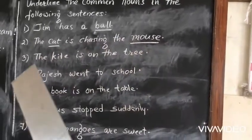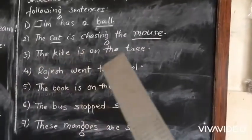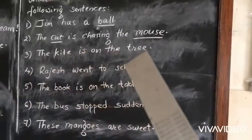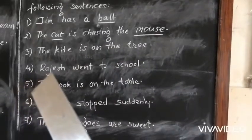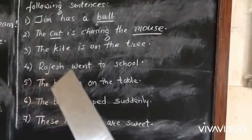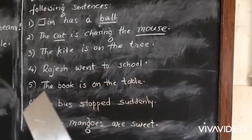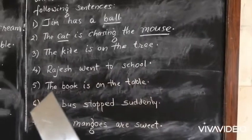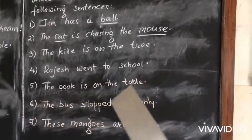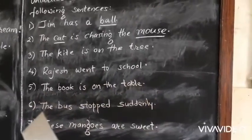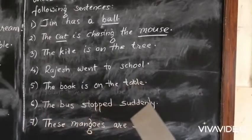Third one: the kite is on the tree. Fourth one: Rajesh went to school. Fifth one: the book is on the table. Sixth one: the bus stopped suddenly.